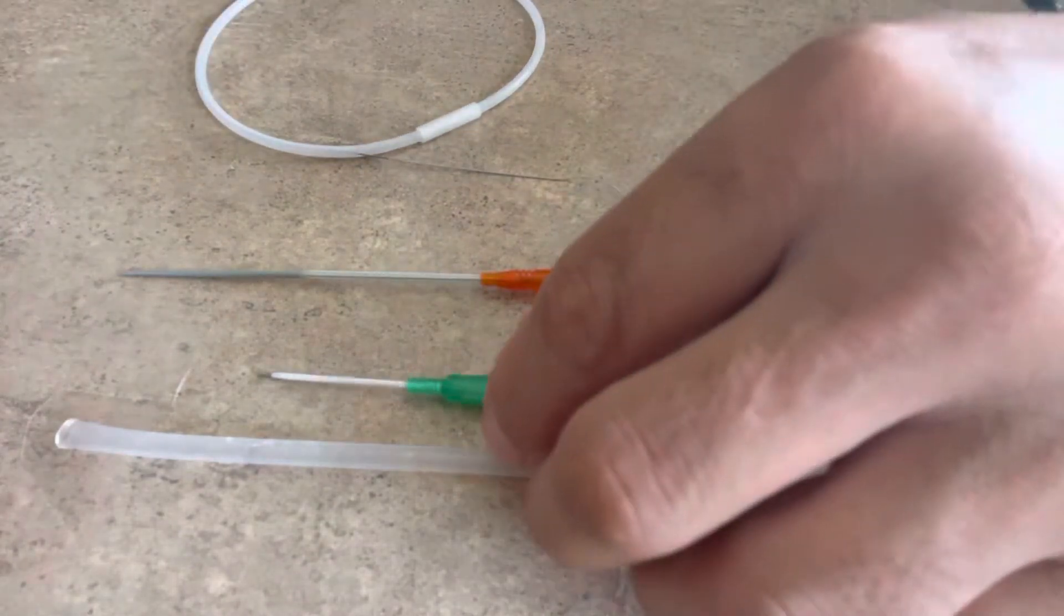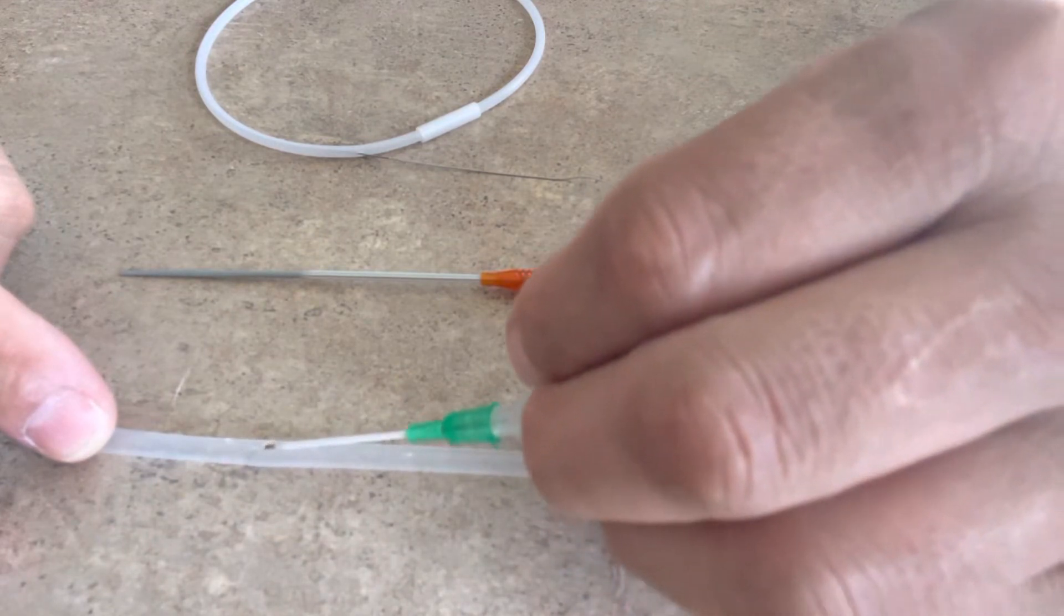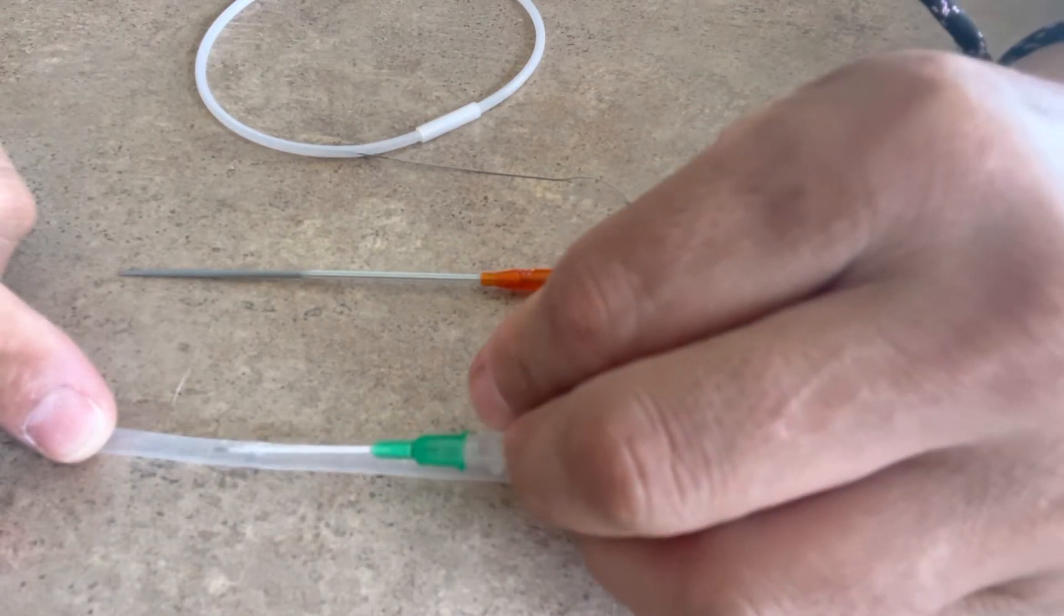So the first thing we'll do is we'll start IV access. So standard stuff, we're going to put in an 18 gauge angiocatheter here, like we normally would.